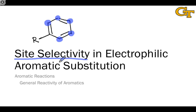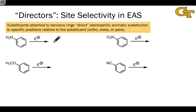Using resonance and a careful evaluation either of the starting aromatic or the sigma complex that results after coordination of the electrophile, we can see why certain sigma complexes are favored over others. Let's start with some interesting observations of electrophilic aromatic substitutions of different substituted benzenes.